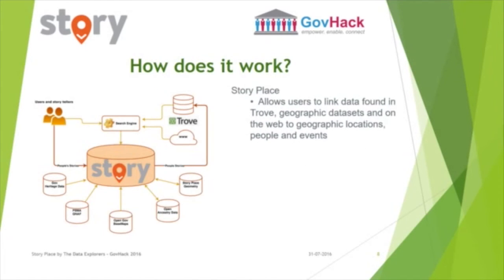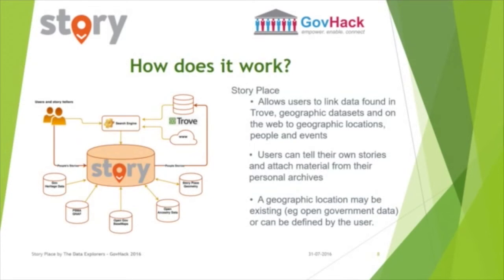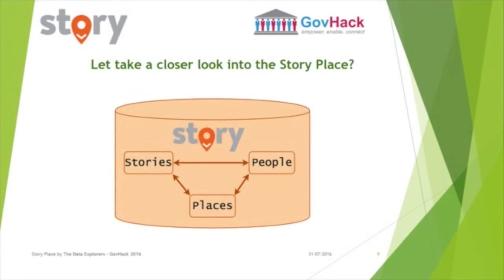Storyplace allows users to link data found in Trove, geographic data sets and the web to geographic locations, people and events. Users can tell their own stories and attach material from their personal archives. A geographic location may be existing from open government data or can be defined by the user. Storyplace holds the links between stories, people and places. The stories can come from users and their personal archives, memories, photos, or from government data.